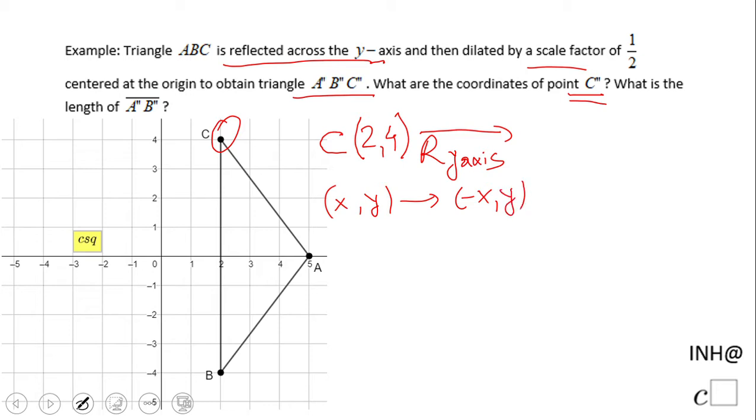In other words, the x switches, y stays the same, which gives us (-2,4). If you do not remember the rule, then do the reflection. It's going to be right here. That will be C'.